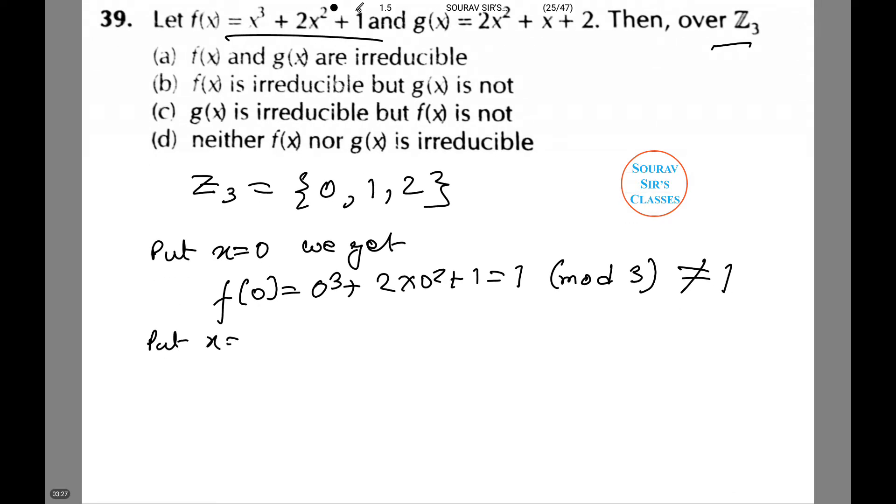Now for x equals 1, we get f(1) equals 1 cubed plus 2 times 1 plus 1, which equals 4 mod 3, which is also not equal to 1.